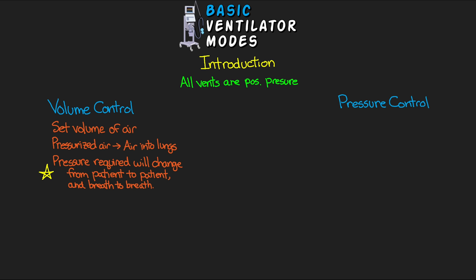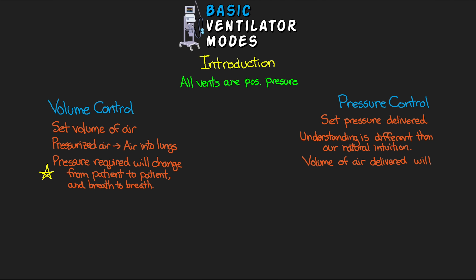In pressure control, the reverse is taking place — we're going to be controlling the pressure delivered to our patients. The thinking here is different from our natural intuition. Similar to volume control, the volume of air delivered can and will change from patient to patient and breath to breath. This summarizes the main difference: in volume control, volume is constant and pressure is the changing variable, whereas in pressure control, pressure is constant and volume is the changing variable.